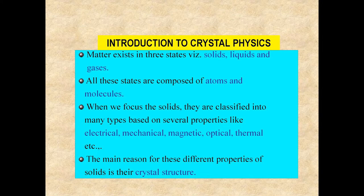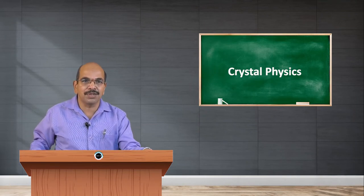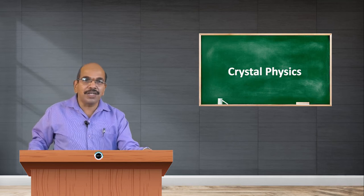Let us concentrate on solid materials. Solids are made up of atoms and molecules and are further classified into different types based on their properties, such as electrical, mechanical, magnetic, optical, and thermal properties. The main reason for the different physical properties of solids is their crystal structure — based on the crystal structure and the orientation of different atoms with respect to different axes, the properties differ.